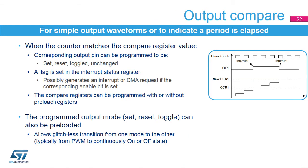A compare event is generated when the counter matches the value of the compare register. This event can trigger an interrupt or DMA request and can be reflected on the corresponding output pin by an output set, reset, or toggle. The compare register can be preloaded — preload must be disabled if multiple compare values must be written during a counting period. The use of preload mode is preferred for real-time applications since it gives a higher time margin for software to update the compare register. The transfer from preload to active value is triggered by an update event. The output compare mode can also be preloaded for glitchless transition from PWM mode to a forced on or off state.